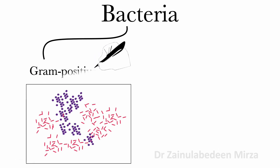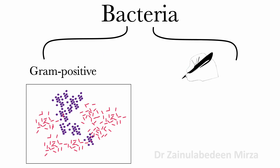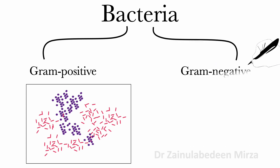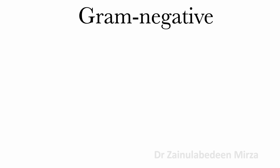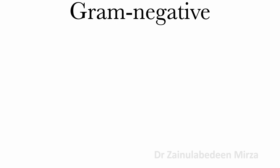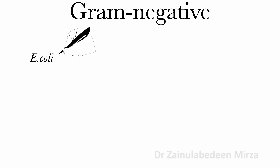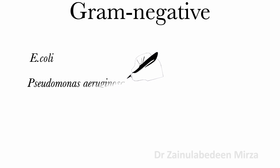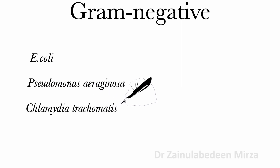Bacteria are divided into gram-positive and gram-negative. There are many gram-negative bacteria such as E. coli and pathogenic bacteria such as Pseudomonas aeruginosa, Chlamydia trachomatis, and Yersinia pestis.